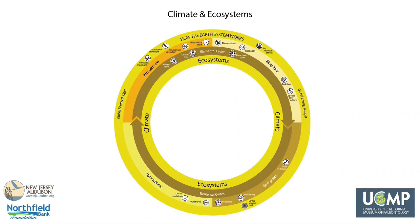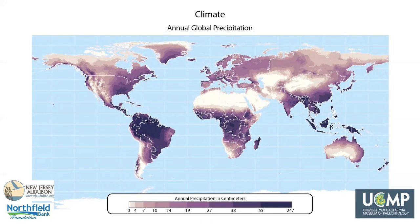A major focus in the study of global change is explaining how climate and ecosystems change. Given the number of factors that influence climate and ecosystems, including all of the processes outlined in the previous slides, we have placed the terms climate and ecosystems in the innermost ring of how the Earth's system works. A region's climate is defined by its average weather over a long period of time. Weather describes the short-term variation in temperature, precipitation, wind, and clouds. Annual precipitation is determined by the amount of sunlight received at different latitudes, as well as atmospheric and oceanic circulation patterns.